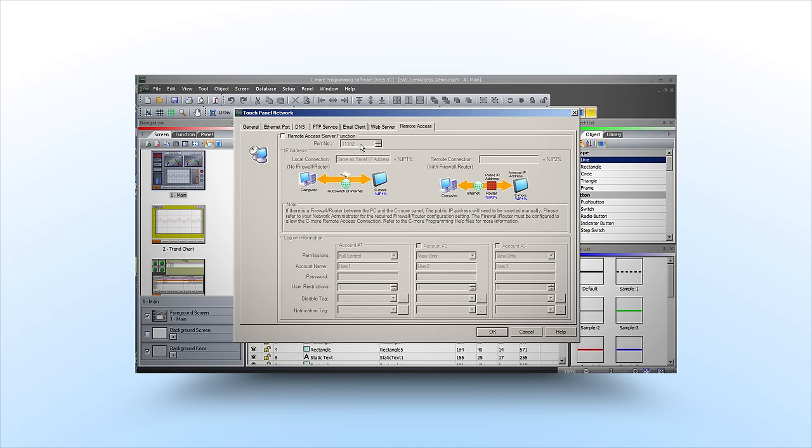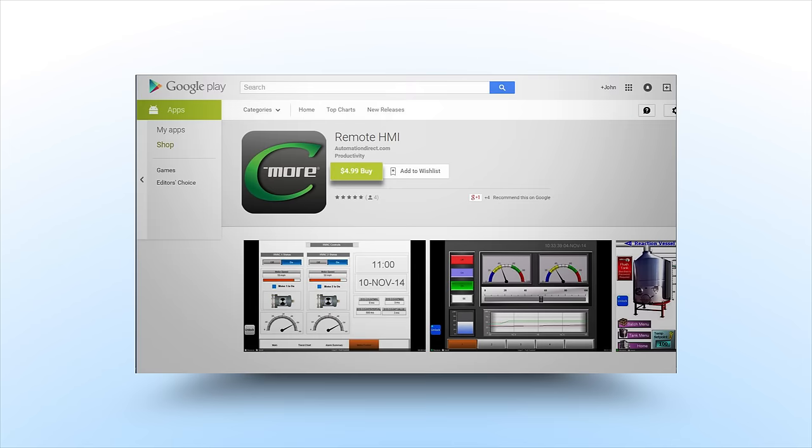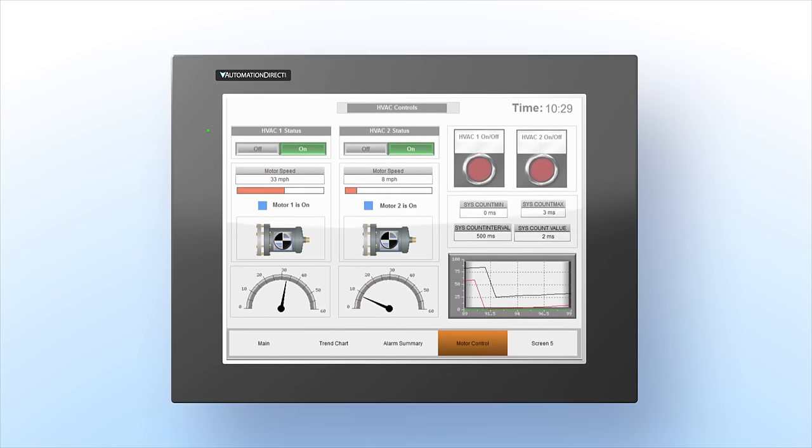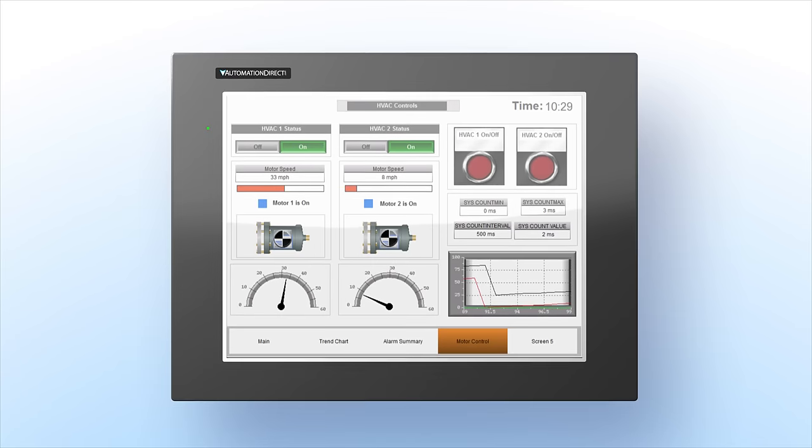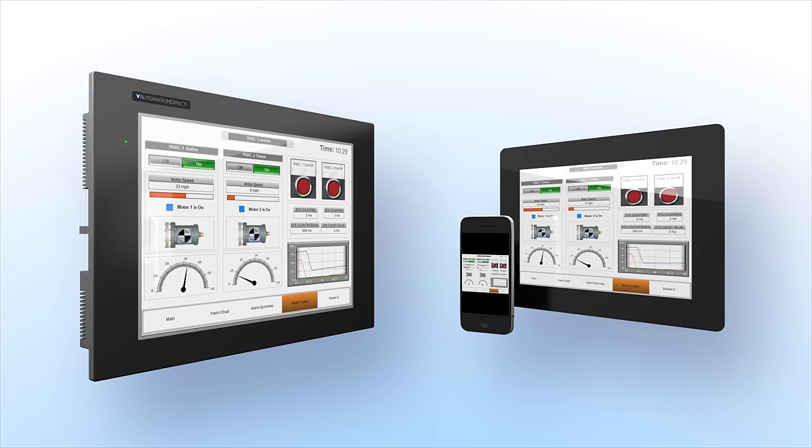You just enable remote access on your C-more, download the app on your mobile device and you are ready to go. All of your project controls on the C-more are now available to you on your mobile device. It just works.